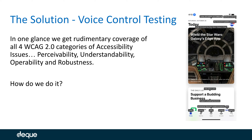One of the things VoiceOver testing suffers from is that everything gets focused. Voice control, however, will only put gray boxes on operable things. So if we see these gray boxes over things, we know it is not only accessible in voice control, but we can also conclude that it will be accessible in VoiceOver as well.